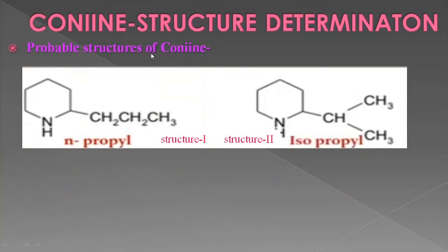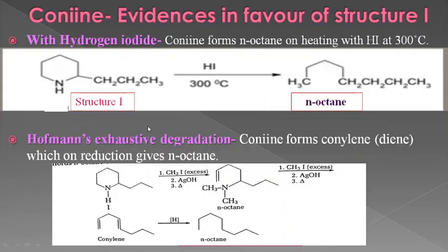The probable structures of conine on the basis of zinc dust distillation are: Structure 1 — a piperidine ring with a normal propyl group at position 2; and Structure 2 — a piperidine ring with an isopropyl group at position 2. There are evidences in favor of Structure 1.